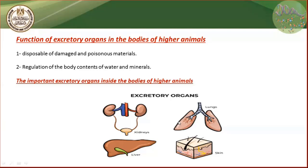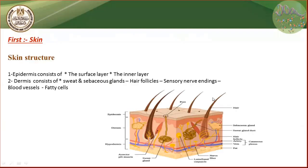Now we will talk about the skin structure, as we can see in the diagram. The skin consists of two layers. The first layer is called the epidermis — the layer indicated by the arrow. It consists of a surface layer and an inner layer. The surface layer consists of the corneous (keratinous) layer.